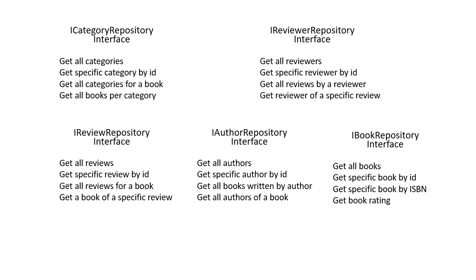Here we are with your first homework, and it's fairly simple. Your homework is to create the interfaces for the rest of the classes. The first one: create the Category Repository interface, from which you will get all categories and a specific category by ID. Also create a method that will retrieve all categories for a specific book and all books for a specific category, so think about what ID you need to pass into the method and what you are actually returning.